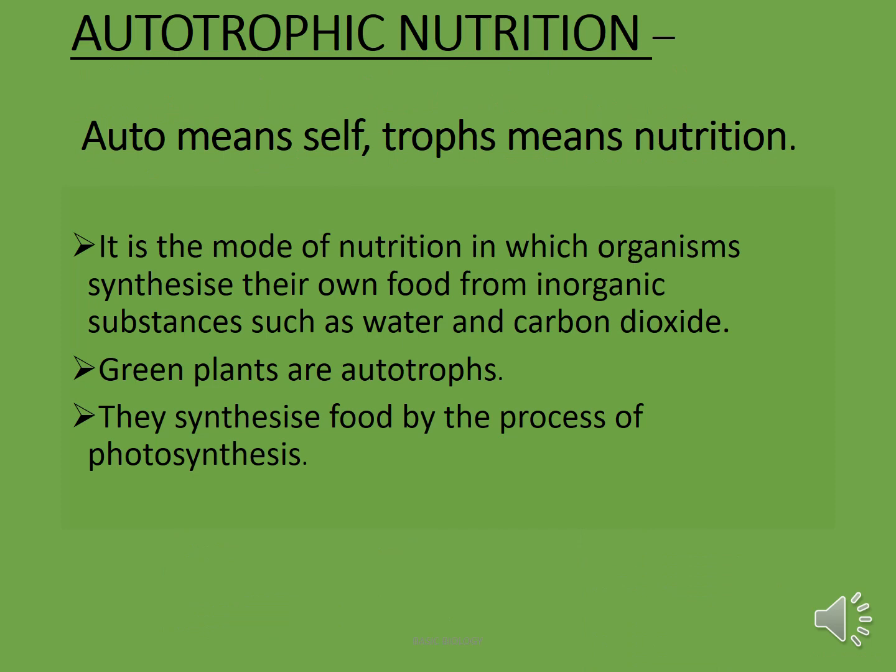In autotrophic nutrition, 'auto' means self and 'trophe' means nutrition. Autotrophic mode of nutrition is the one in which the organism synthesizes their own food by the help of inorganic substances such as water and carbon dioxide. All the green plants are autotrophic because they are able to synthesize their food by the process of photosynthesis.